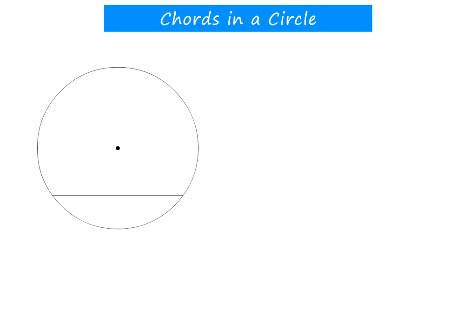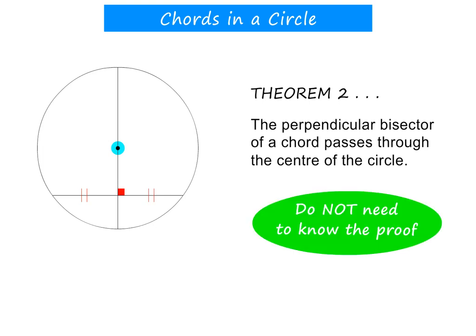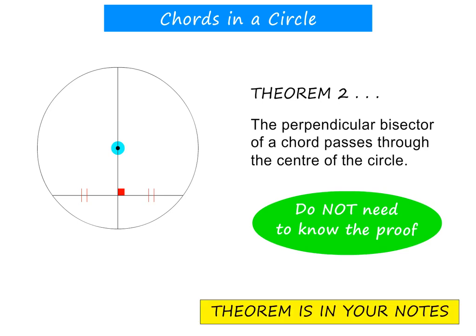There is one more fact that you need to know about chords. The perpendicular bisector of any chord will always pass through the center of a circle. Let's call it Theorem 2. You do not need to know the proof, but you do need to know the statement. You will find it in the notes.